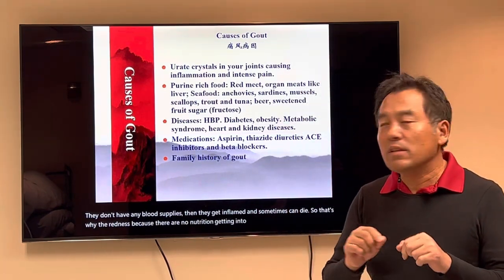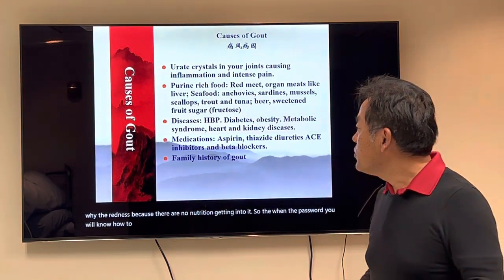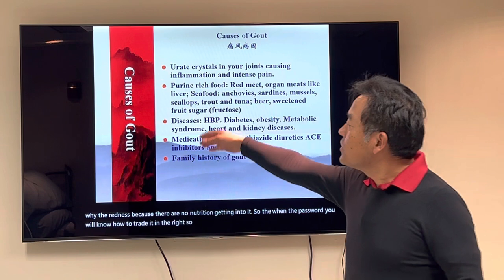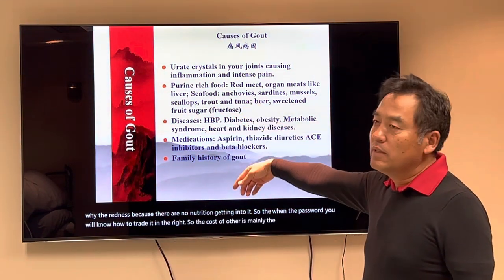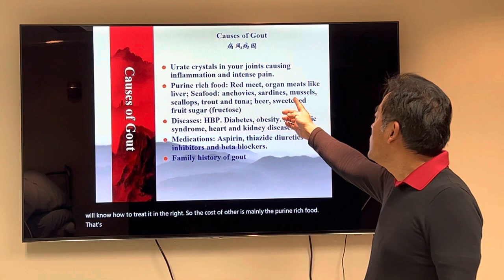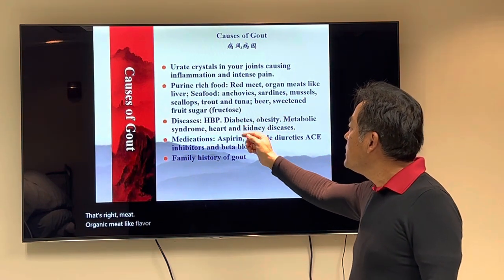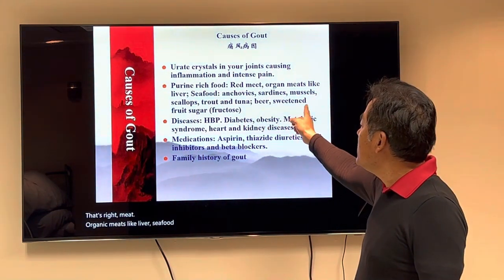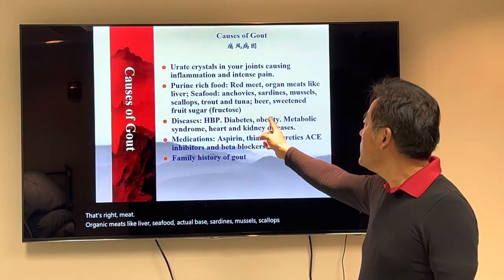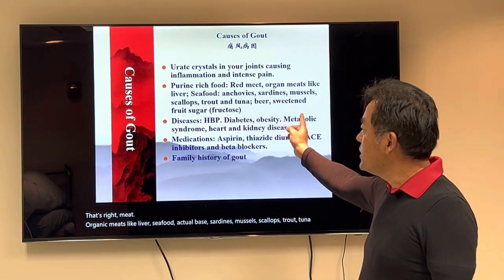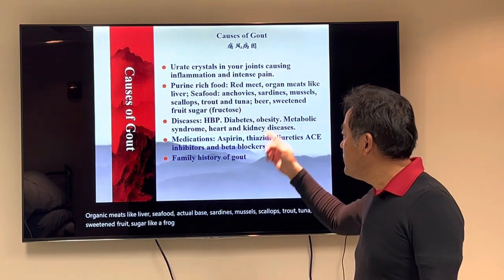So when you know the pathology, you will know how to treat it, right? The cause of gout is mainly the purine-rich food, like red meat, organic meat like liver, seafood — anchovies, sardines, mussels, scallops, trout, tuna — beer, and sweet fruit sugars like fructose. Those are the food triggers.